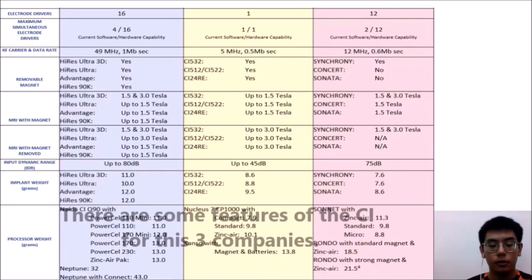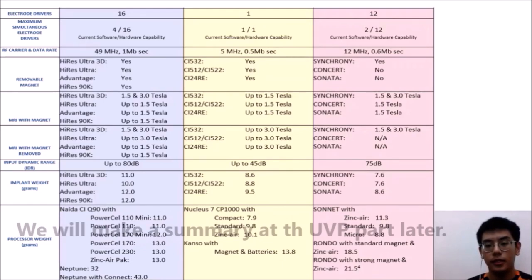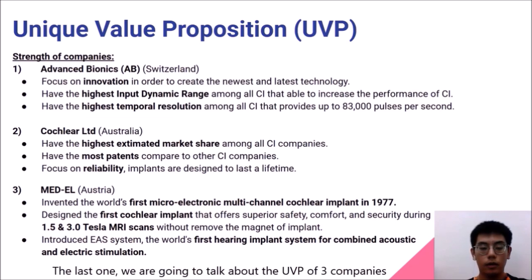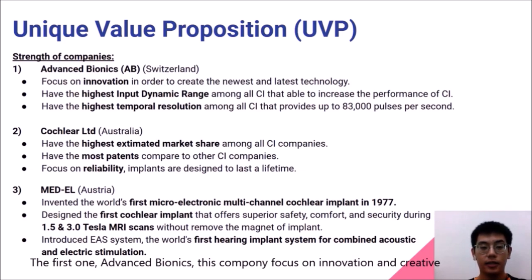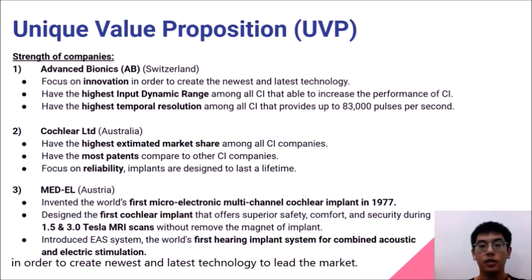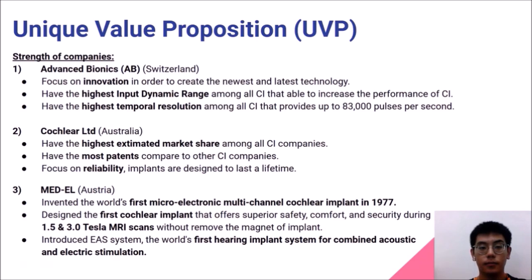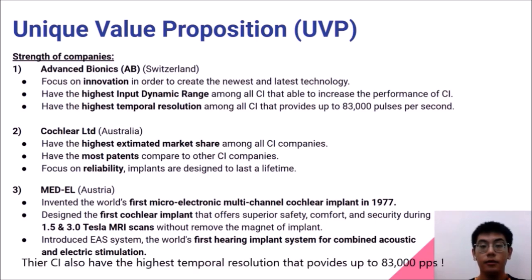There are some features about the cochlear implants for these three companies, which we will summarize in the UEP section. For Advanced Bionics, this company focuses on innovation and creativity in order to create the newest and latest technologies to lead the market. Their cochlear implants have the highest input dynamic range, which increases performance, and the highest temporal resolution, providing up to 83,000 pulses per second.